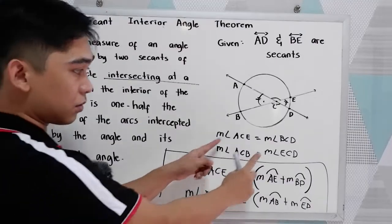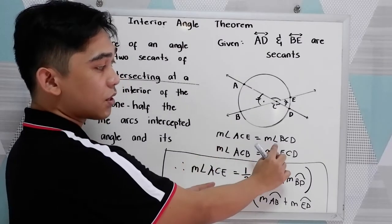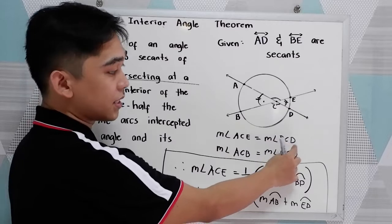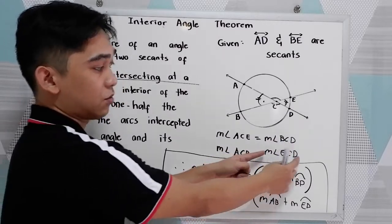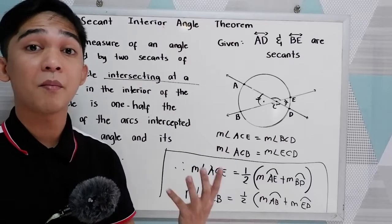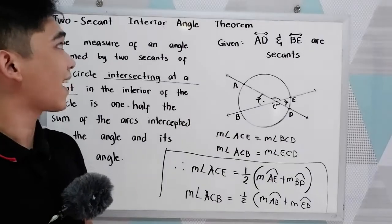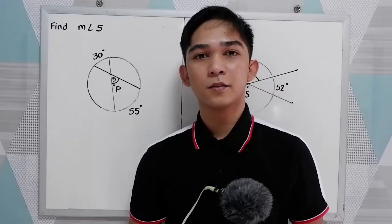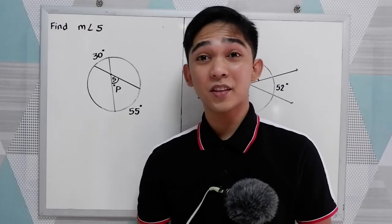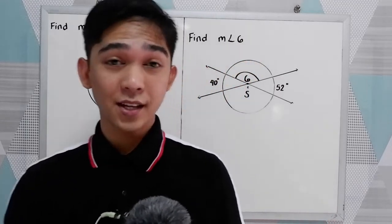And take note, measure angle ACB is equal to the measure of angle ECD. Now, to better understand, let's have some exercises regarding this theorem, two-secant interior angle theorem. Now, to better understand our theorem number two, let's have the following exercises.